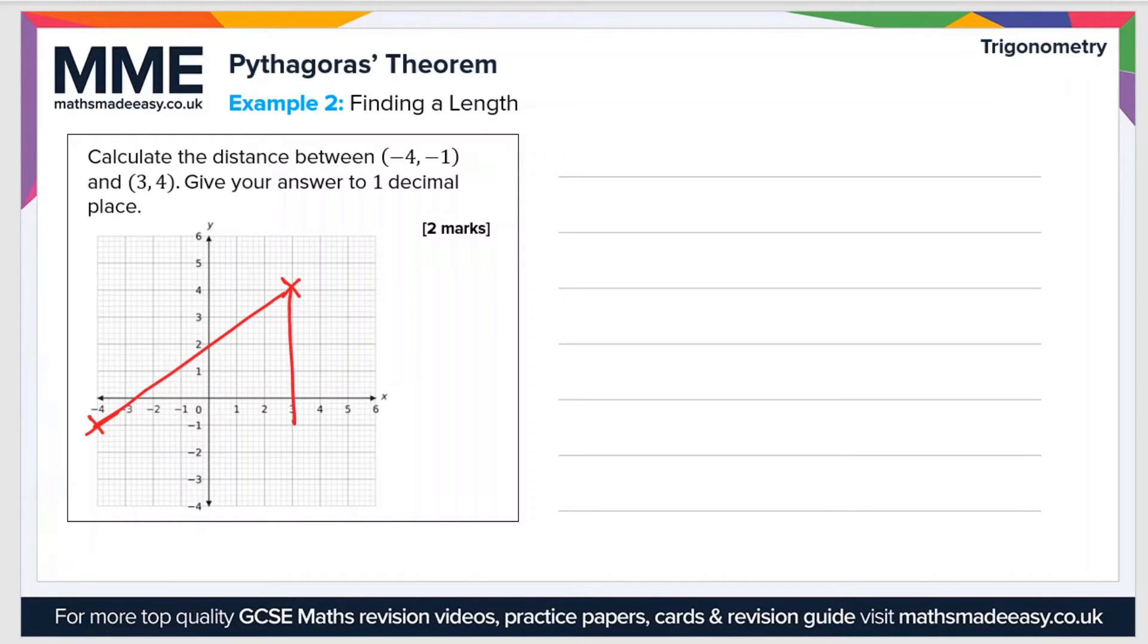The other sides will be the difference in the x values and the difference in the y values. Let's say that C is the distance between the two points, and then A can be the difference in x, and B can be the difference in y.